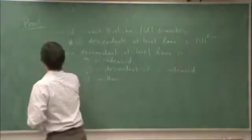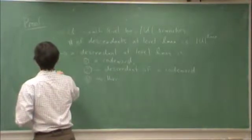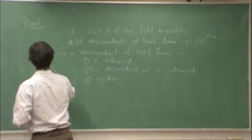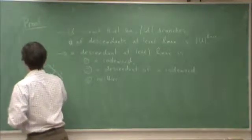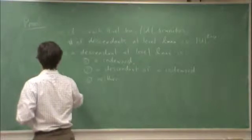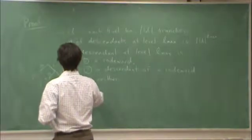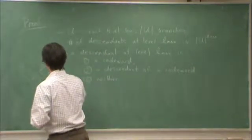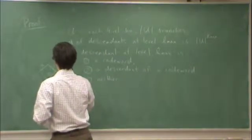So, for example, from my previous code, Lmax was two. There are four descendants at level two. Cardinality of U is two, and the Lmax is four.